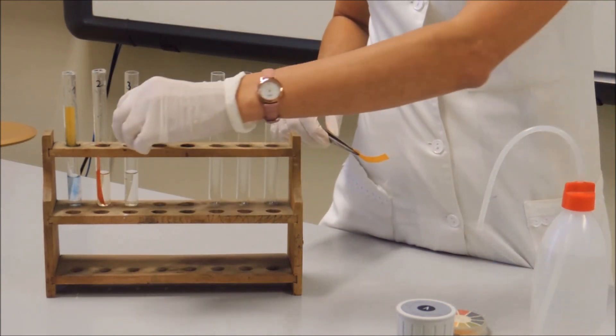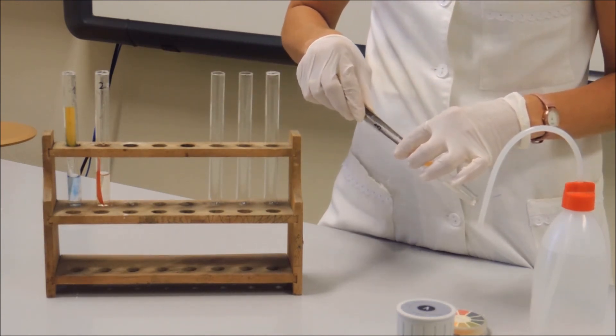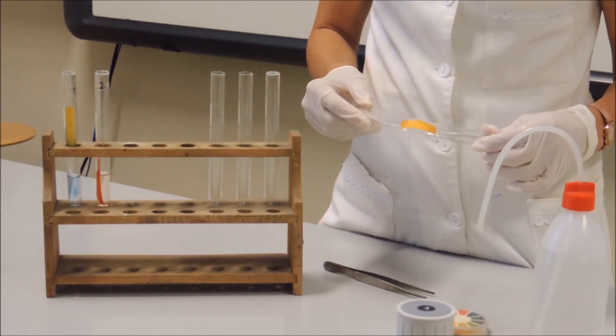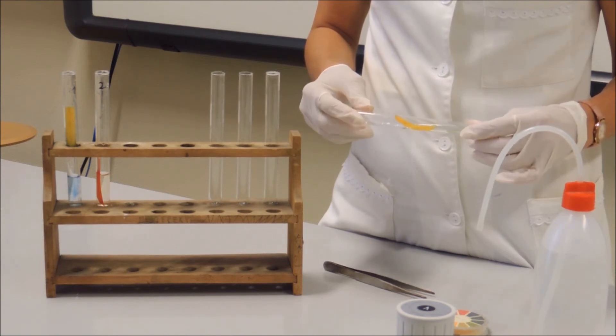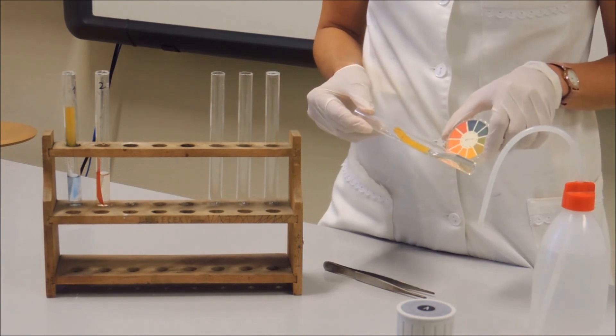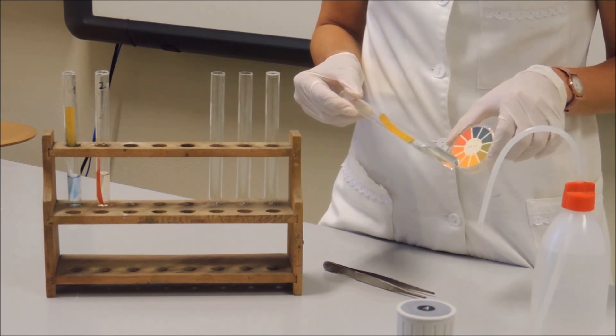Place pH paper in the last test tube. The pH paper's color is greenish, the solution's pH is neutral, therefore the third test tube contains glucose.